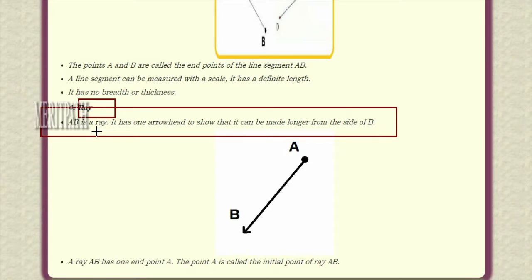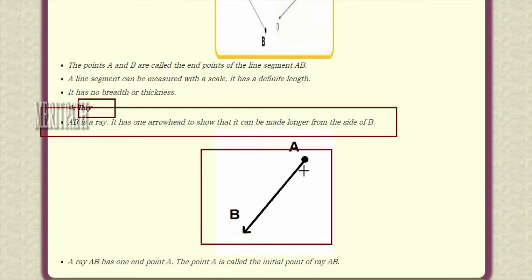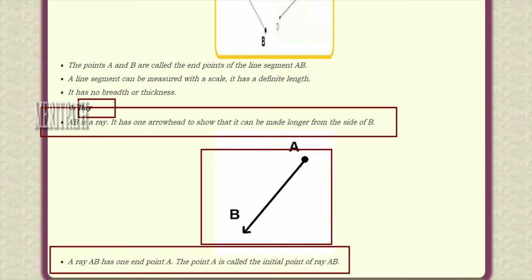A ray is a line which has only one endpoint. It has one arrowhead to show that it can extend longer in one direction. AB is a ray — it has one arrowhead to show that it can be made longer from side B. Point A is the endpoint, and B has an arrowhead, meaning it continuously extends indefinitely on that side. The point at which it ends on one side is called the initial point. Point A is the initial point of ray AB, because A ends at one side while B does not end — it has an arrowhead and extends indefinitely.